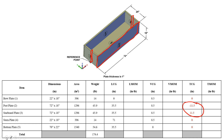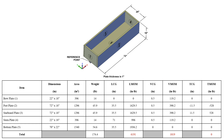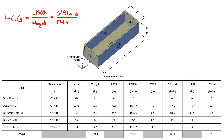Now I multiply the center of gravity distances by the weight in order to get the moment. Weight times longitudinal center of gravity distance equals longitudinal moment; weight times vertical center of gravity distance equals vertical moment; and weight times transverse center of gravity distance equals transverse moment. Next, I sum my moment columns. To find the composite center of gravity of the entire barge, I divide each moment sum by the total weight. For the longitudinal center of gravity, I divide 6,191 inch-pounds by 174.4 pounds, giving me an LCG of 35.5 inches from the reference point.